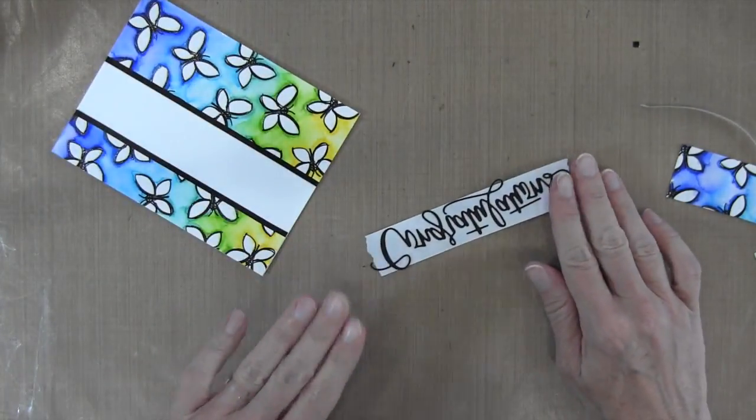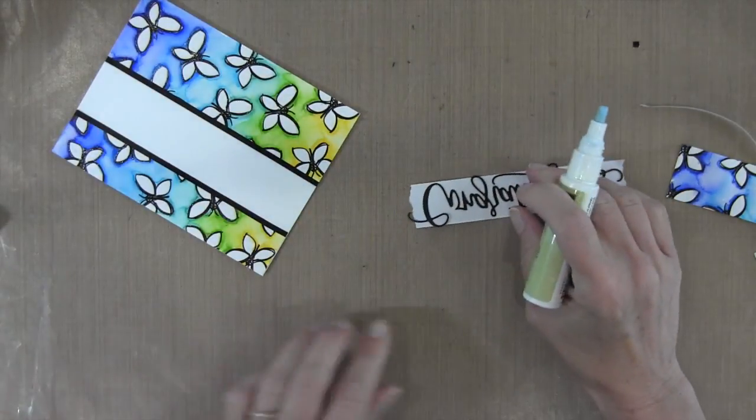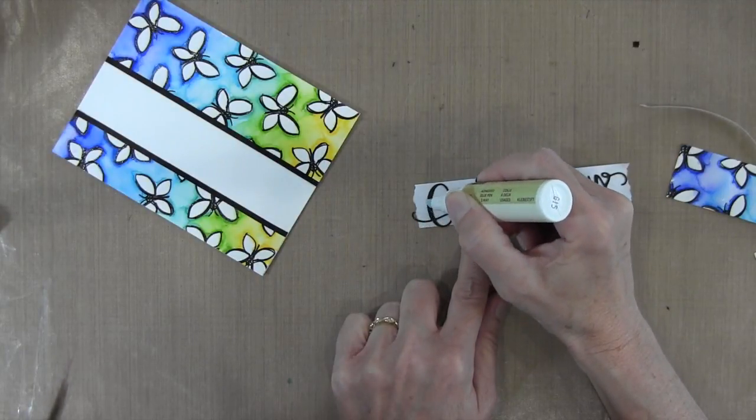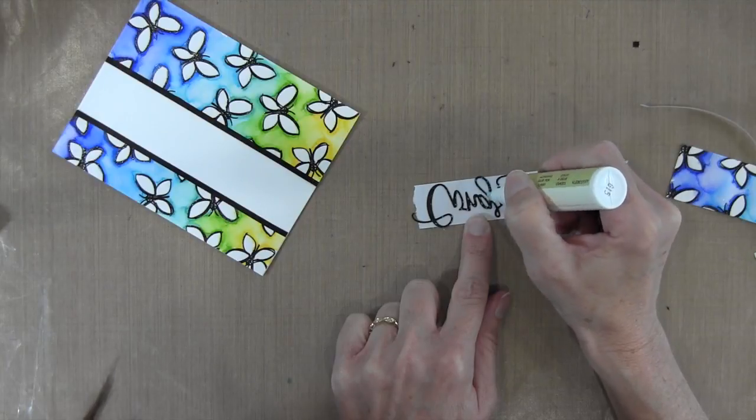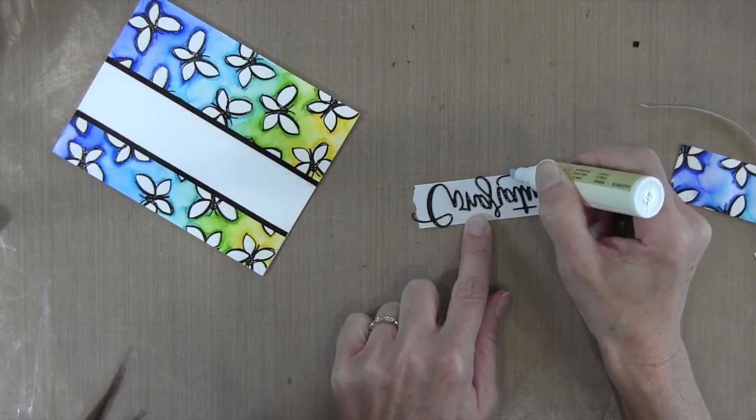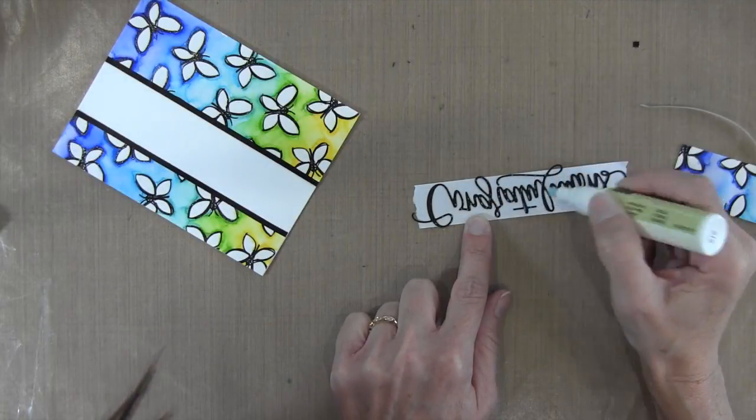I'll take my two-way glue pen. I like this—this is how I usually adhere my sentiments. I just dot the two-way glue pen because you get a nice clean application and it's really precise where you put the glue. I just dotted all along all these different letters.